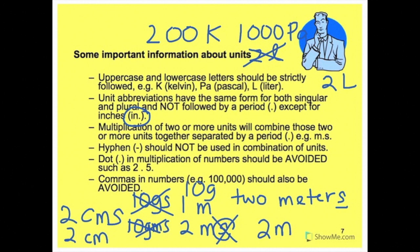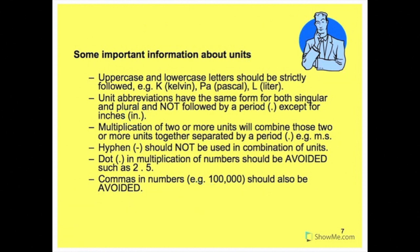Third point: multiplication of two or more units will combine those two or more units together, separated by a period. If you want to combine two units and separate them to show they are not the same unit, we differentiate them with the symbol period. This shows that it's a multiplication of a distance and time, a distance of some meters multiplied with time of some seconds. For the fourth point, hyphen should not be used in combination units. We use the dot instead of the hyphen. The dot in multiplication of numbers should be avoided, such as 2.5. It's not 2.5, 2 multiplied by 5. Avoid using this.